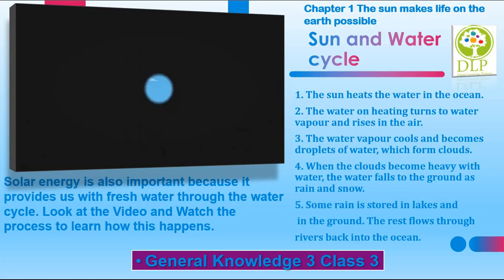Sun and Water Cycle: Solar energy is also important because it provides us with fresh water through the water cycle. Let us understand the water cycle step by step. Step 1: The sun heats the water in the ocean. Step 2: The water on heating turns to water vapor and rises in the air.